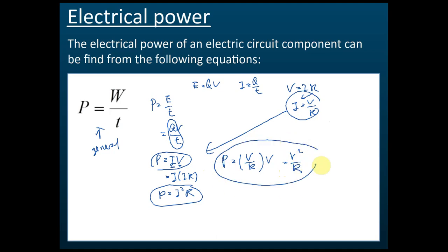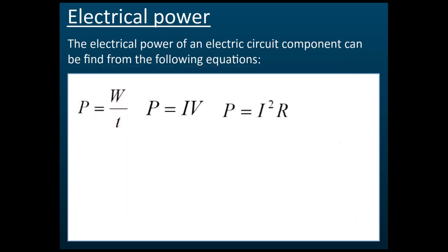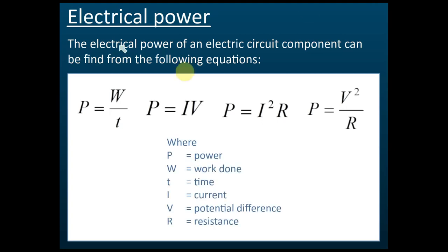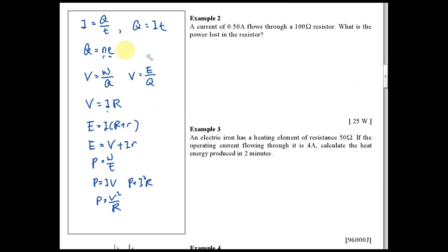So the three electrical power formulas are P = IV, P = I²R, and P = V²/R. In these formulas, P is power, W is work done, T is time, I is current, V is voltage, and R is resistance. Make sure you remember all of these formulas — they are the equations learned so far in this chapter.